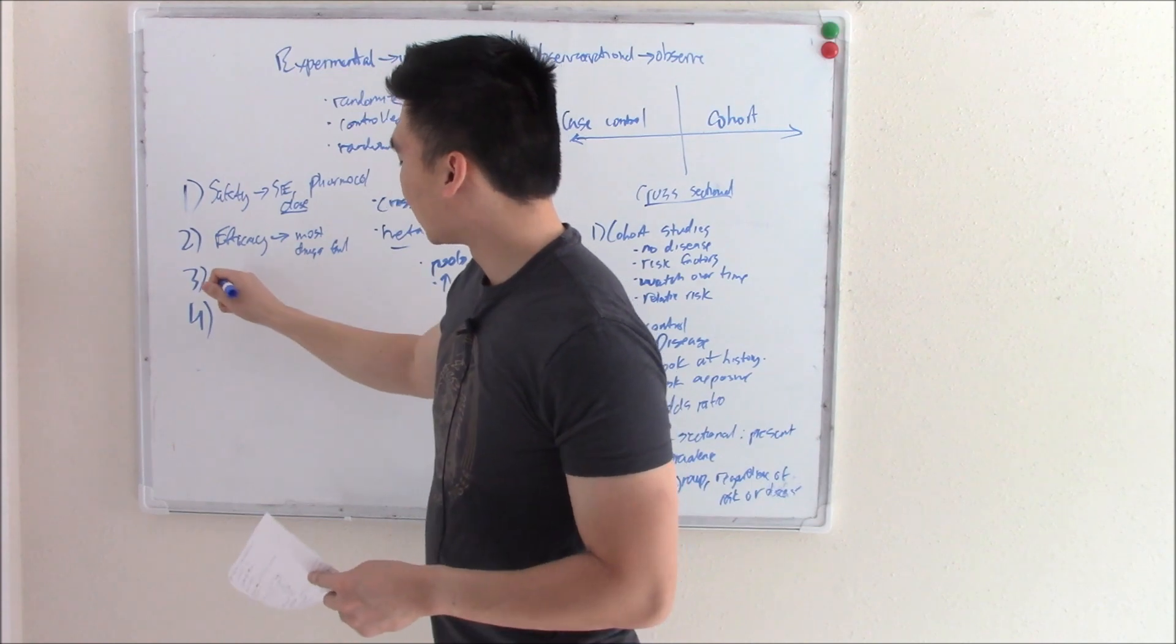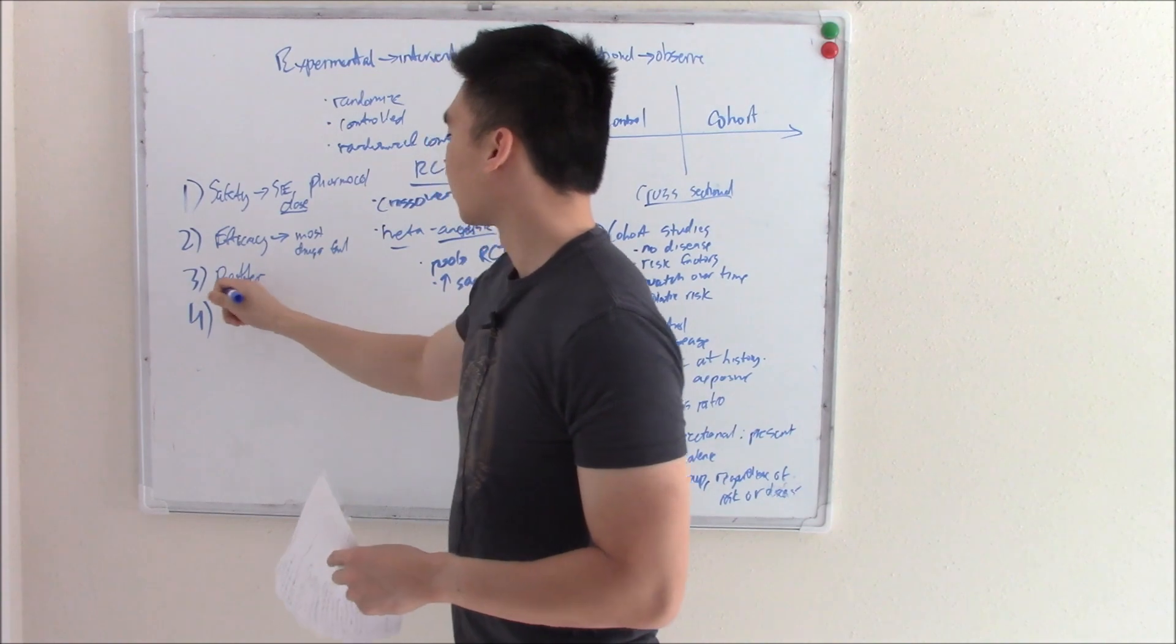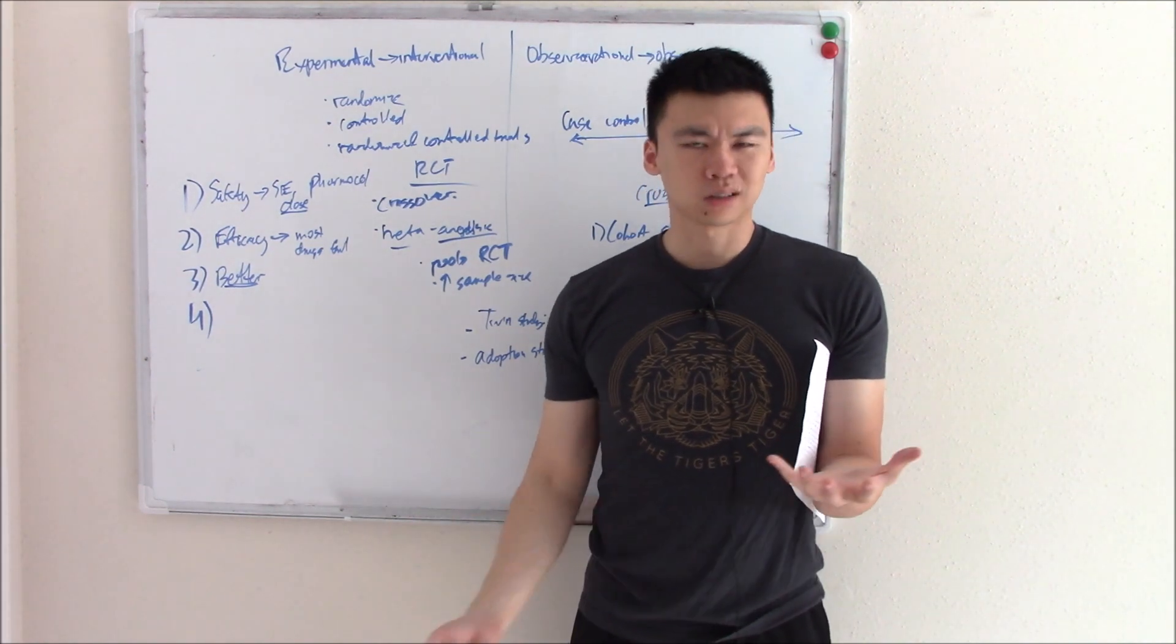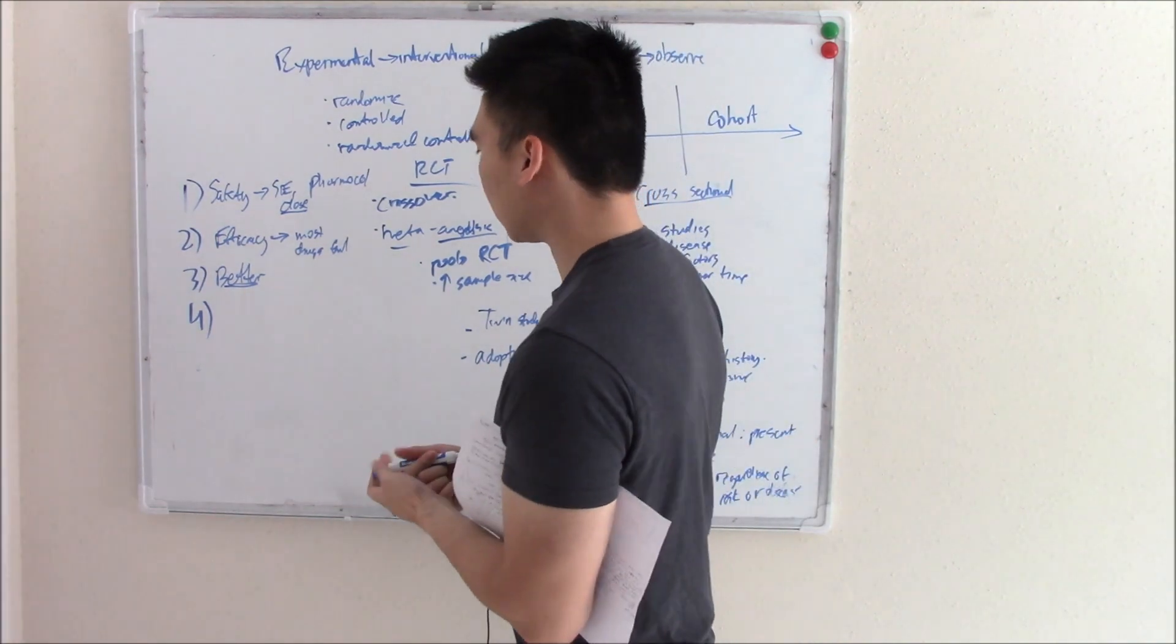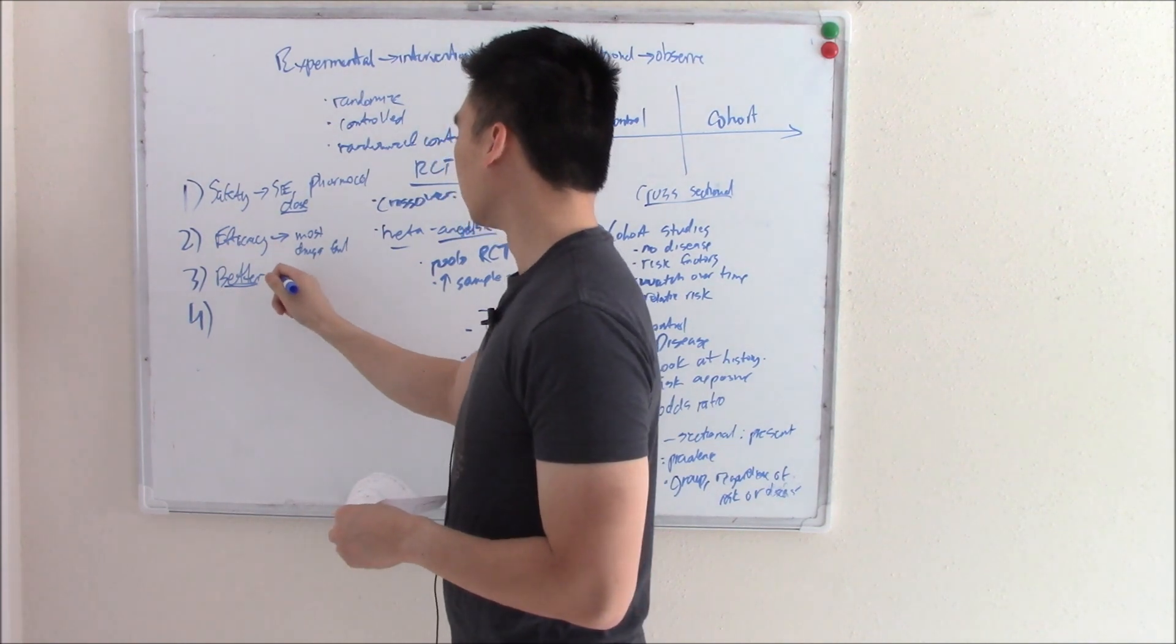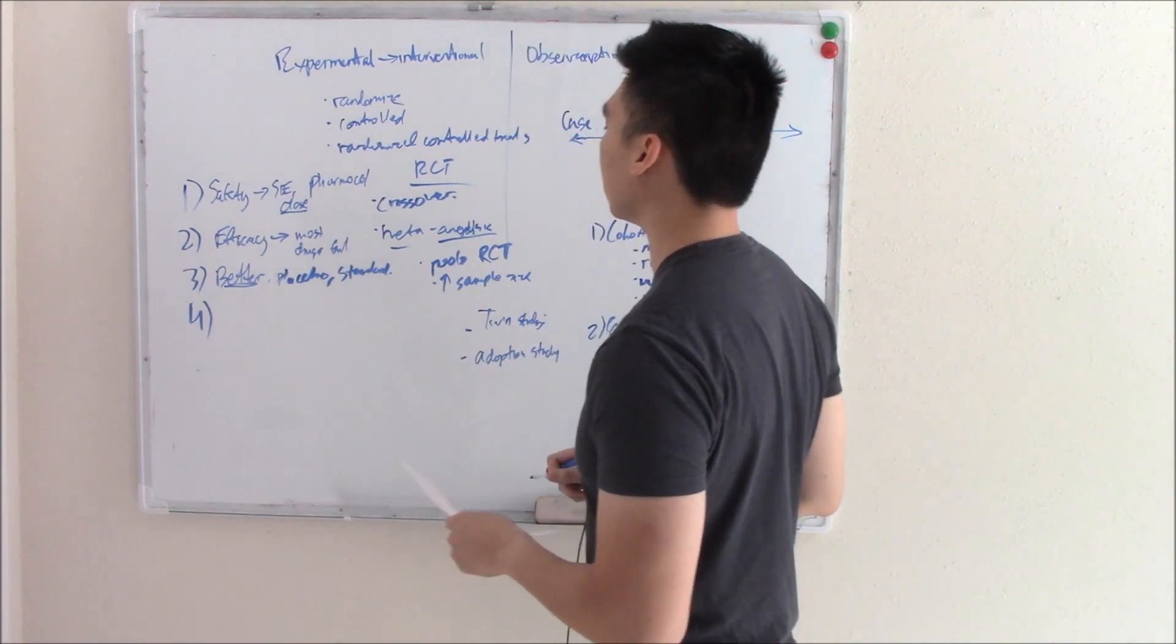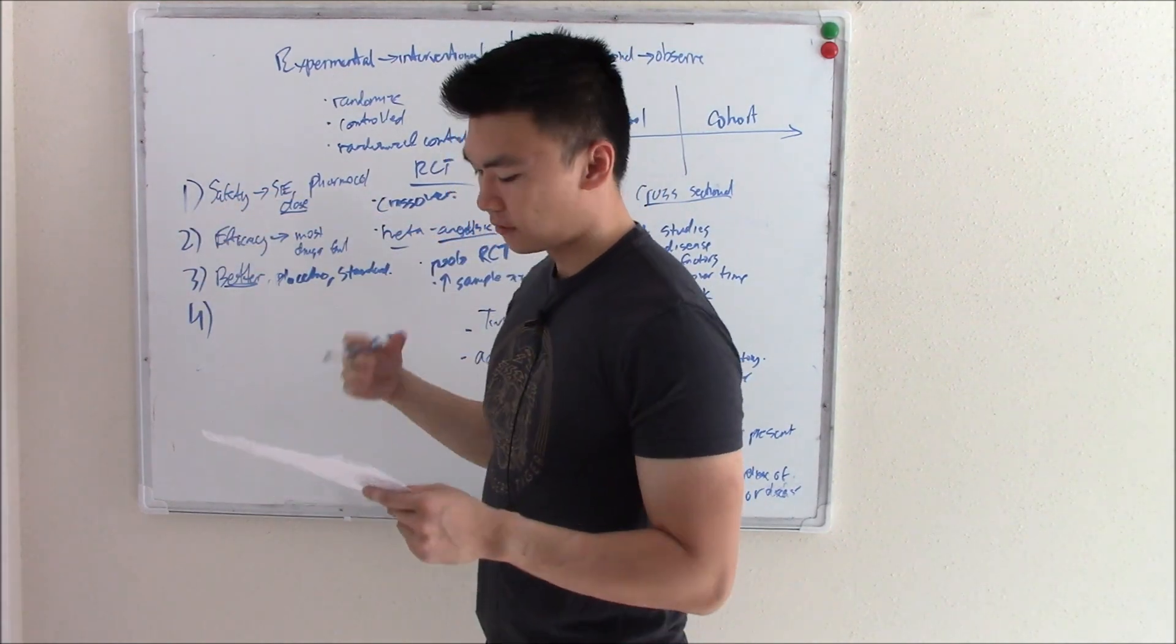If you can make it past efficacy, then you see phase three and that is, is it better? Is it better than the drugs we have currently? You could develop a drug, spend all this time and money into it. But if it's worse than the one we have currently, why bother? So this phase, phase three determines whether or not it is better. So you compare it to placebo, you compare it to the standard drug that we give.